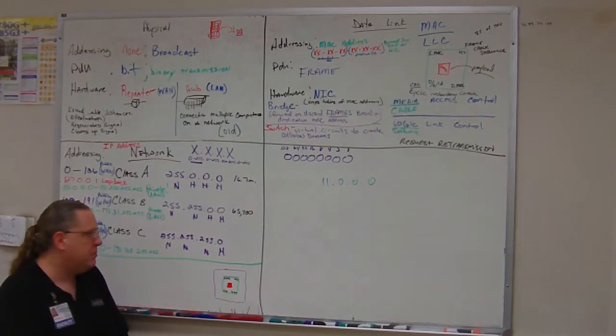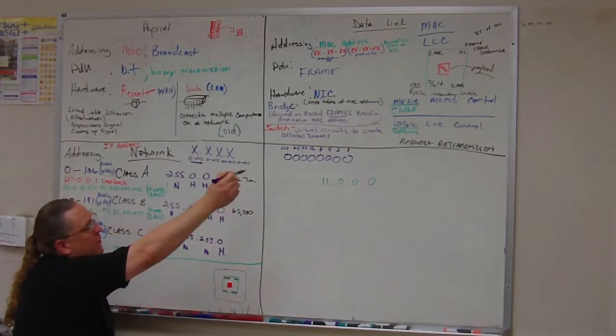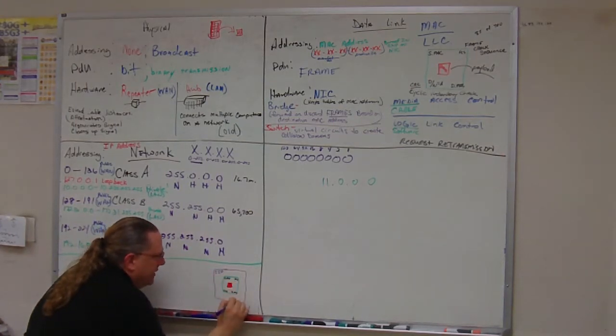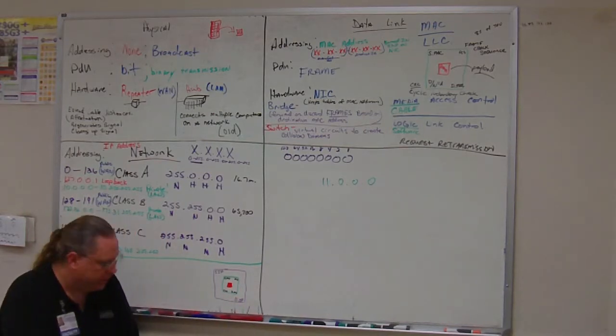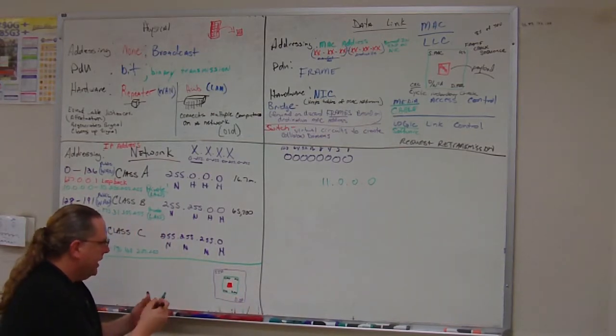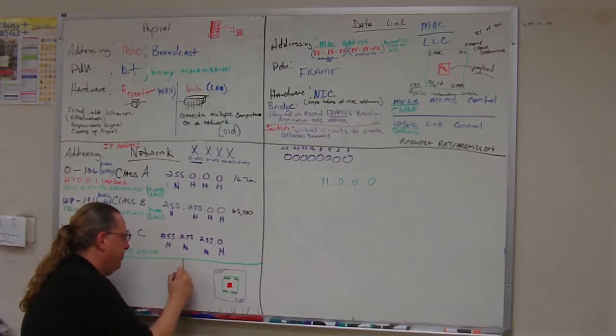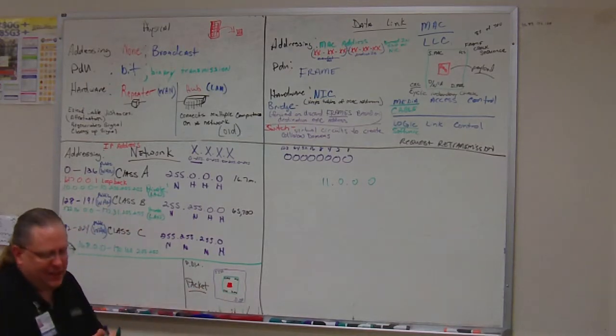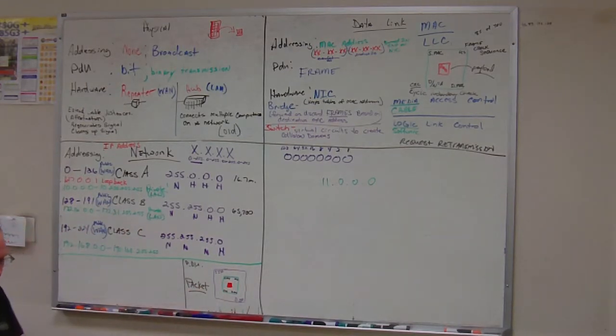Now, this is pretty easy. All we do is we take a frame, and we add a source IP address and the destination IP address. And the name of this, the PDU, it's called a packet. So basically, everything gets packaged up as a packet to get put out onto the network.